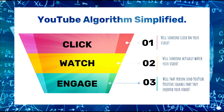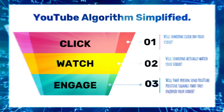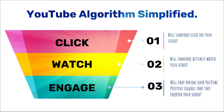पहला factor है click — यानी click through rate। जब आप YouTube open करते हो, आपको बहुत सारे random videos मिलते हैं। आप कौनसे video पे click करते हो यह depend करता है आपके thumbnail पे — आपका thumbnail कितना attractive है — और आपके title पे — आपका title कितना interesting है।